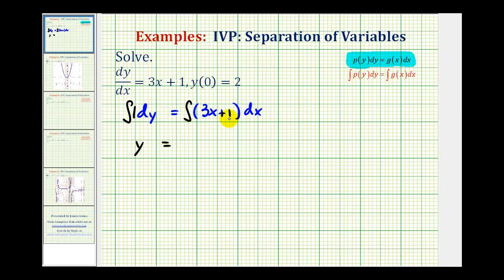So we'll have y equals, now the integral of three x plus one with respect to x. We're going to have three times the integral of x to the first, which would be x to the second divided by two, plus the integral of one with respect to x, which would be x plus our constant of integration.